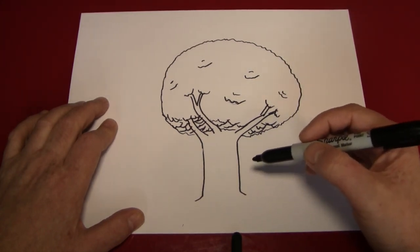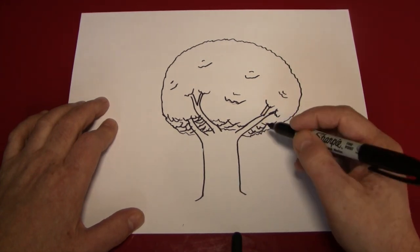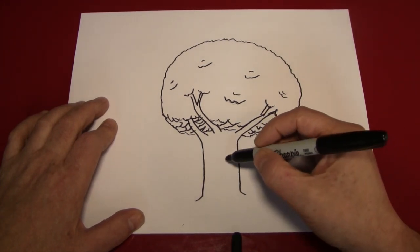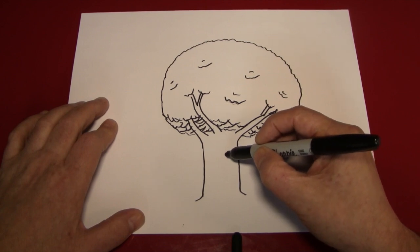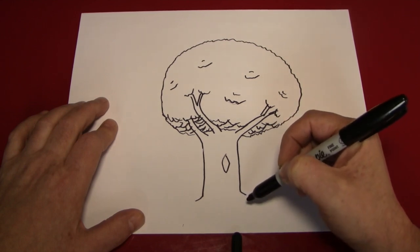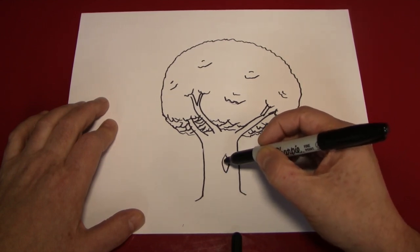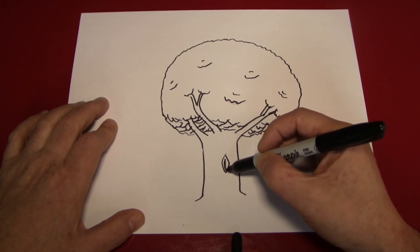Next thing we're going to do is we're going to make the bark for the trunk of the tree. I like to start by adding a knot or two. And that can be simply done by making a shape like that, sort of a rounded diamond, and then filling it in.